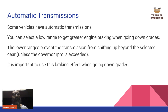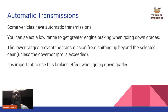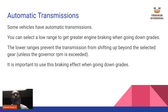Some vehicles have automatic transmissions where you can select a low range to get greater engine braking when going down grades. The lower range prevents the transmission from shifting up beyond the selected gear unless the governing RPMs are exceeded. It is important to use this braking effect when going down grades.